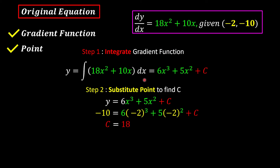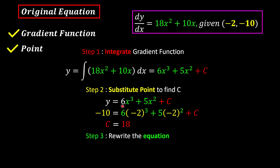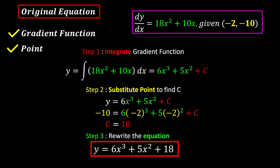Following 'girlfriend selling popcorn every day' — E means rewrite the equations. Since we know c is 18, we can write the equation as y equals 6x cubed plus 5x squared plus 18. And we are done.